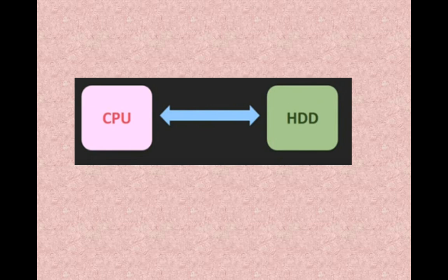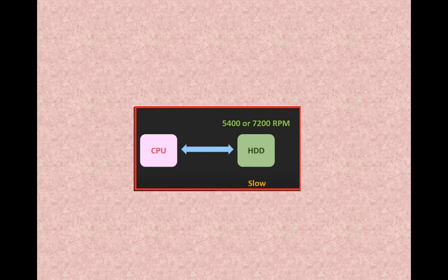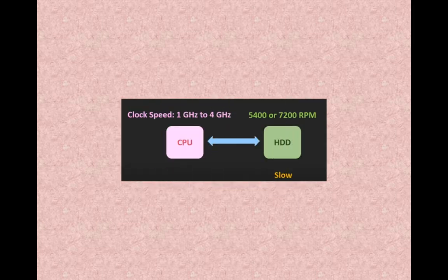Since your hard disk drive has mechanically rotating parts, if we talk from the speed point of view, it is slow. Its normal rotation per minute is 5,400 to 7,200. Your processor has very high capacity.